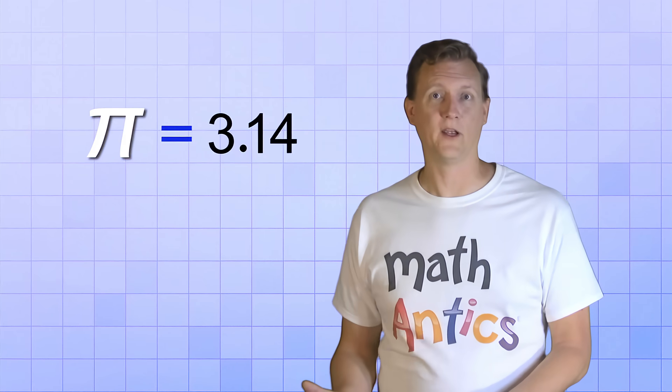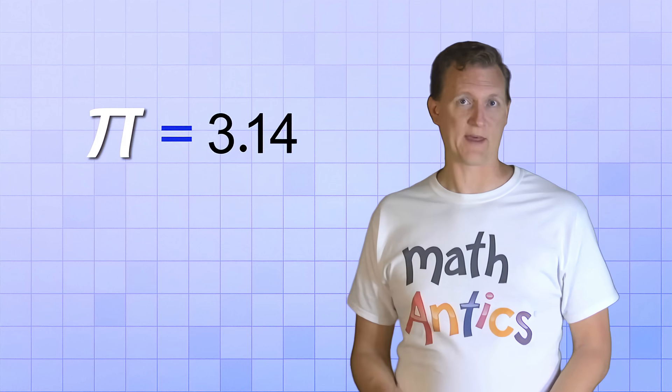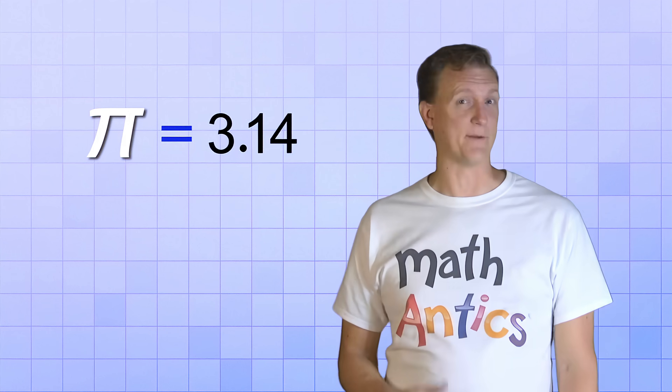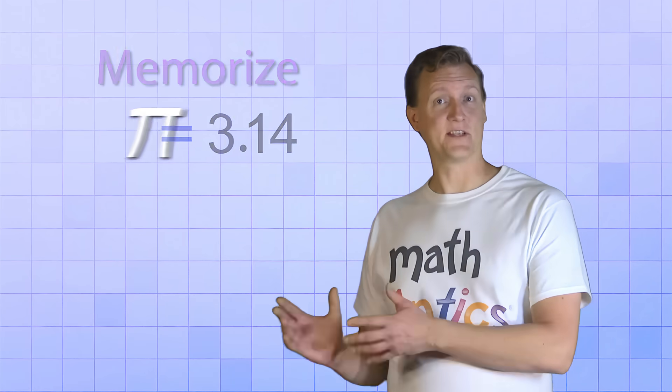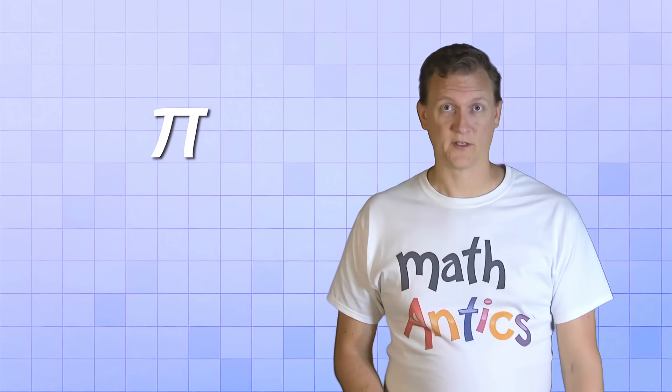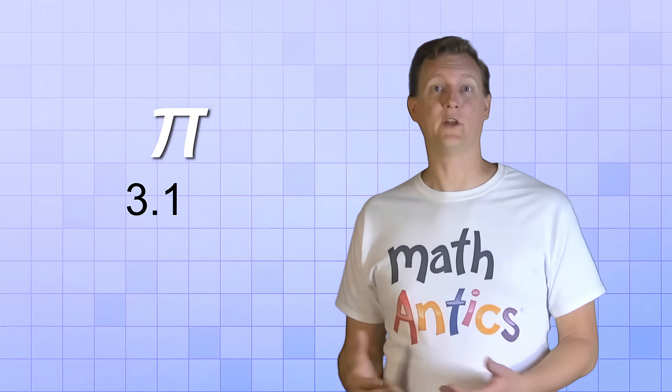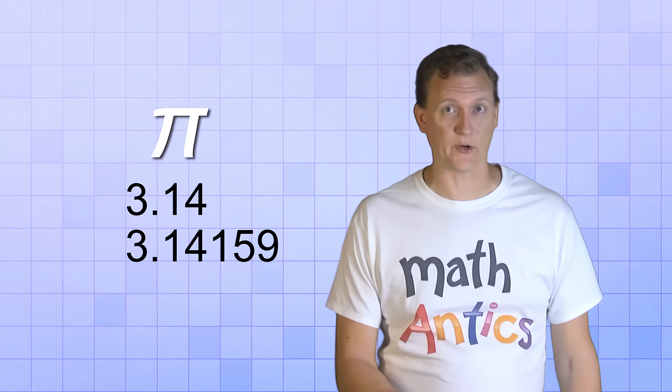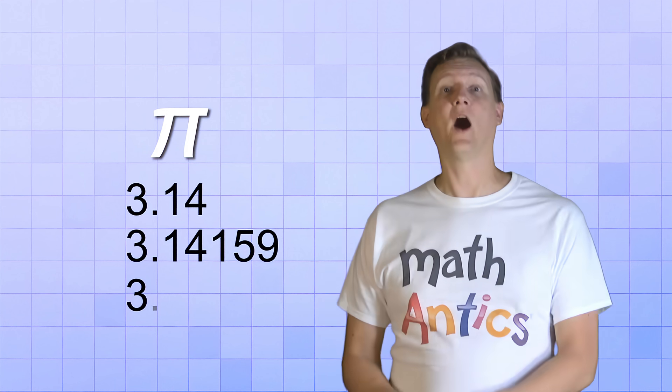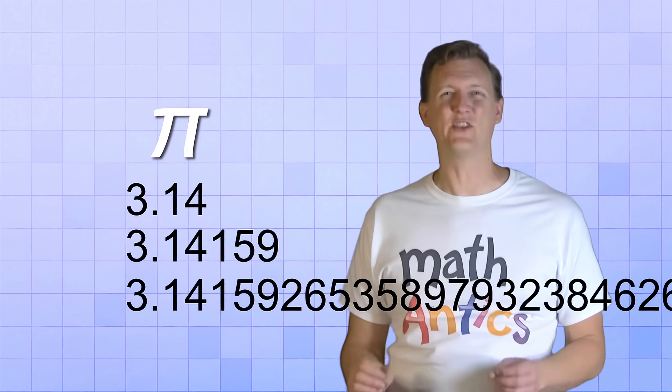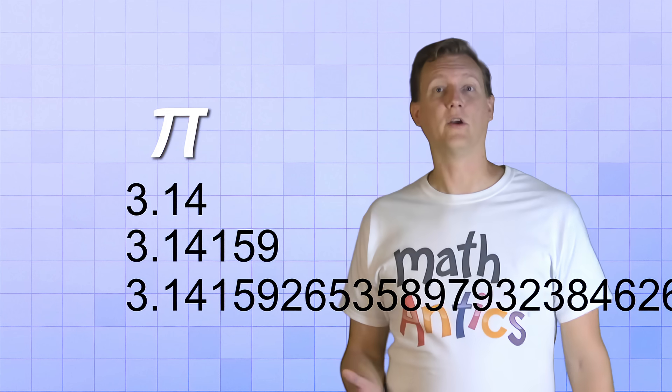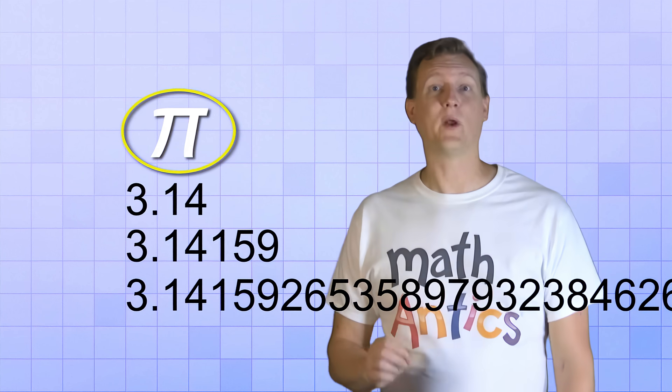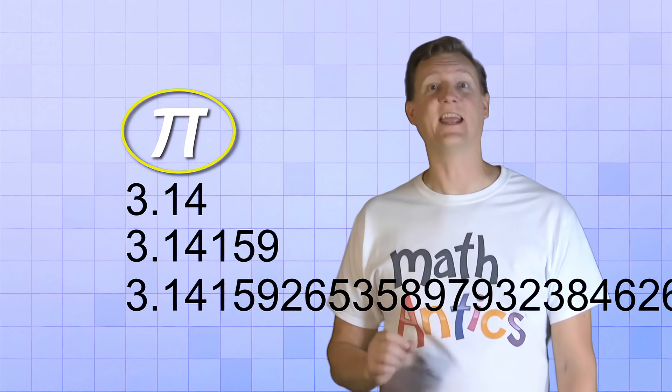Pretty amazing, huh? But the good news is that saying Pi is 3.14 is usually close enough for most math problems, so that's all you really need to memorize. And that's why we use a symbol for Pi in equations. We could write Pi with just two decimal places, or we could write it with five decimal places to be more accurate, or we could write it with hundreds of decimal places to be super accurate, or we could just use the symbol to represent the true value, which is infinitely accurate.